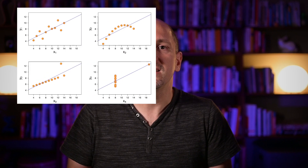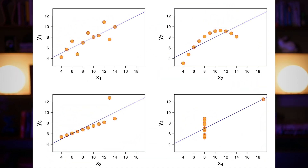Take a look at these four charts. Clearly, these are four different datasets — they look very different. And yet, they actually share a lot in terms of their statistical properties. The x and y means and standard deviations are the same for all four charts. Also, the correlation coefficient or r-squared values are the same. And yet, they're clearly different.